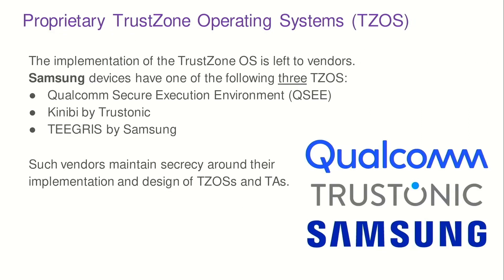Although ARM sets the hardware standard, the implementation of the operating system running inside TrustZone is left to different vendors, creating a very fragmented environment. Even looking only at Samsung devices, we have at least three different TrustZone operating systems implemented by three different vendors, with some combinations — for example, code initially developed by Qualcomm with additional code from Samsung. This is very critical code, so vendors keep it secret and provide no information or source code about their implementations.